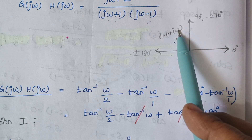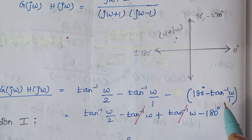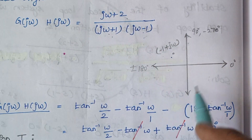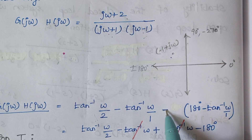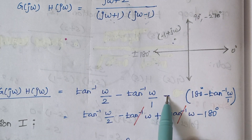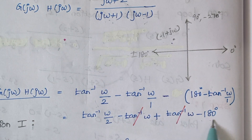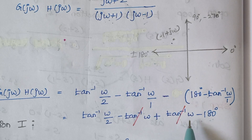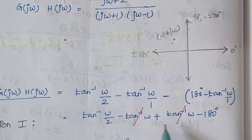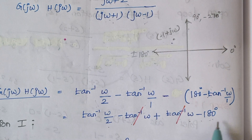The imaginary coefficient is ω and the real term is minus 1, so we write 180 minus tan inverse of ω by 1. Again this is a denominator term, so when moved to the numerator we include a minus sign. Moving the minus sign inside the bracket gives minus 180 degrees, and minus into minus becomes plus tan inverse of ω. The minus tan inverse ω and plus tan inverse ω cancel each other, leaving only tan inverse of ω by 2 minus 180 degrees.